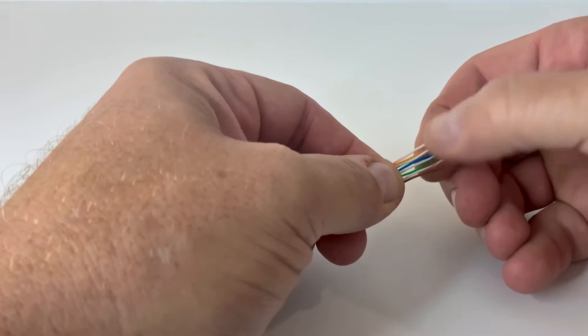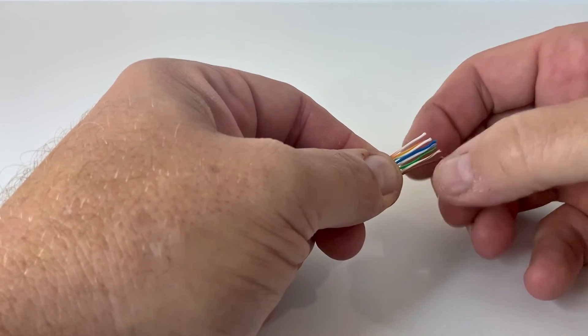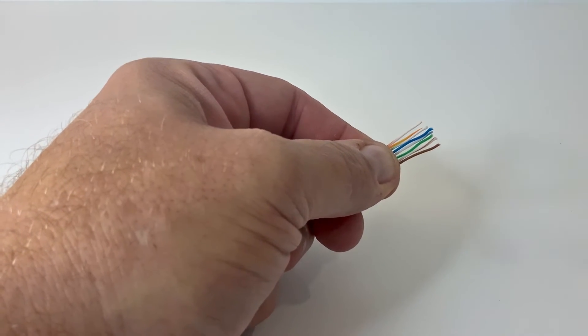If you find any of the wires are not in the correct pinout order, it's important to arrange them accurately before you crimp them.